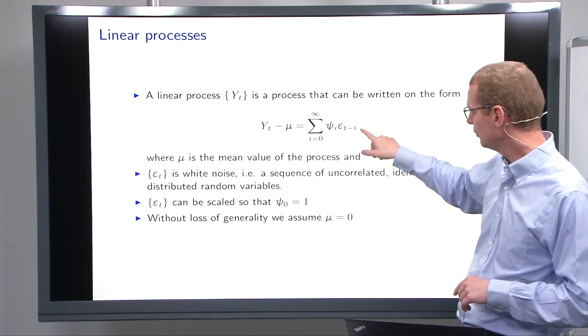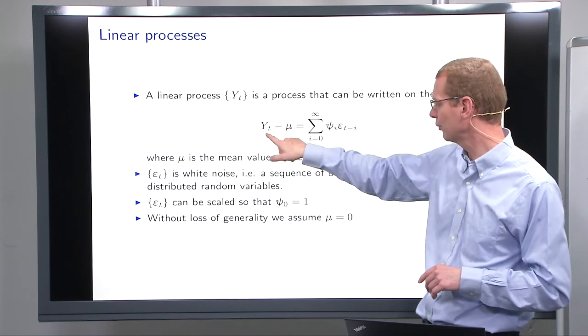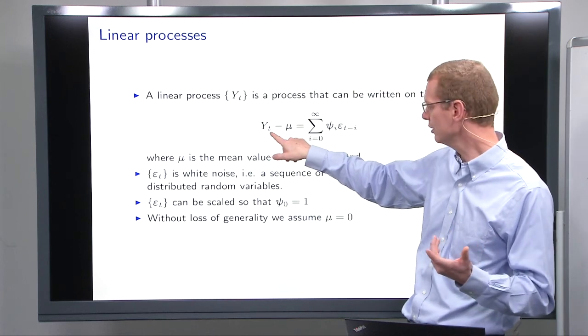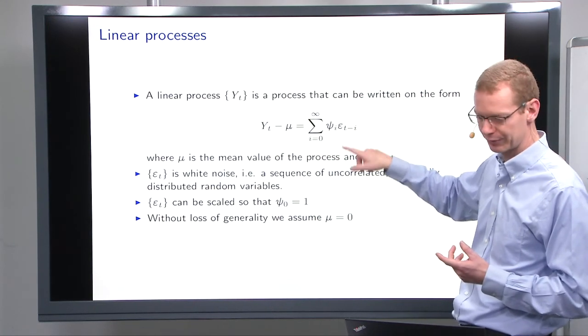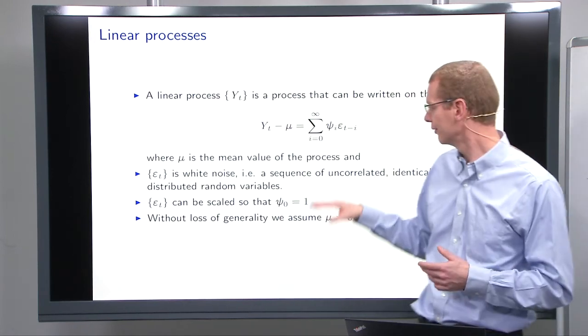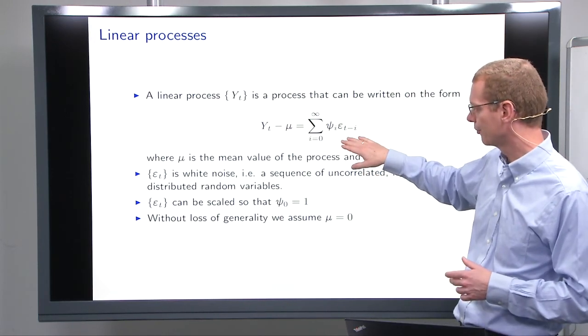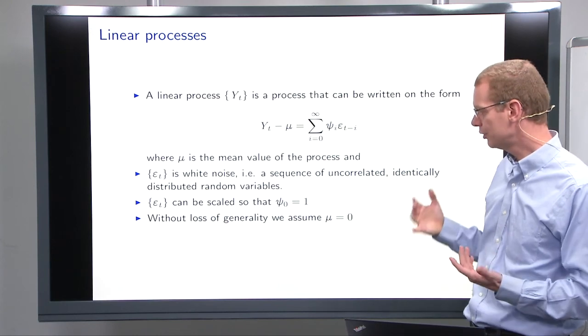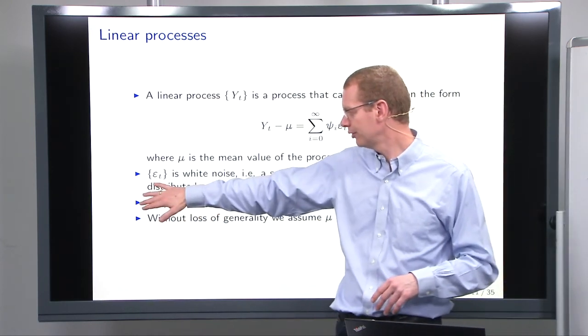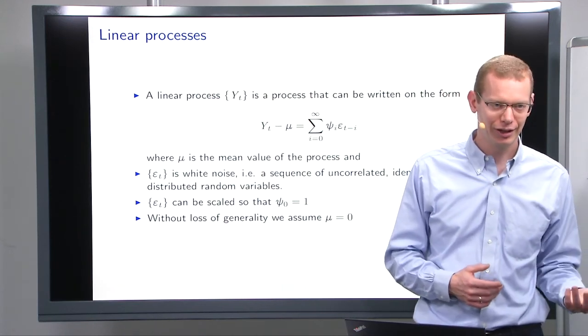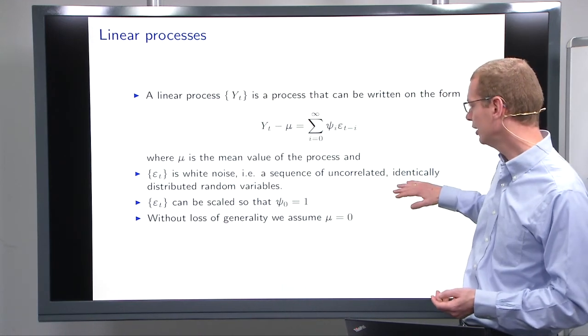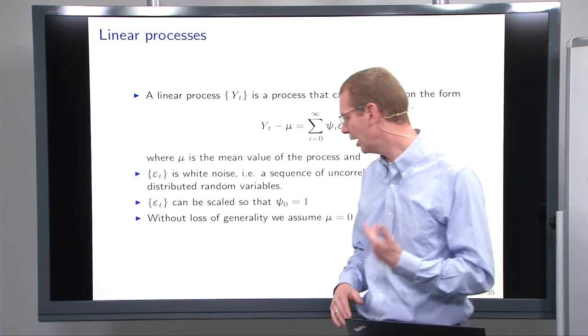With this particular notation, the most current observation is the infinite sum of all the previous epsilons. That's why we have this time index here. What we assume is that ε_t is white noise, which means they are uncorrelated, independently identically distributed, or just iid.